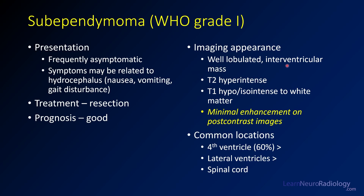When you see these, they tend to be well-lobulated, well-defined intraventricular masses. They are T2 hyperintense, iso-intense to white matter on T1, and usually have minimal enhancement. If you see a minimally enhancing intraventricular lesion, think subependymoma, because most other intraventricular lesions are enhancing. Common locations include the fourth ventricle, lateral ventricles, and along the spinal cord.